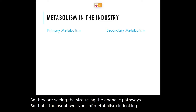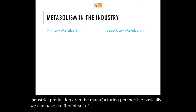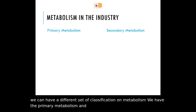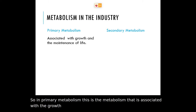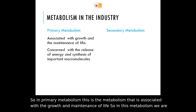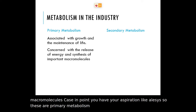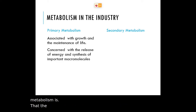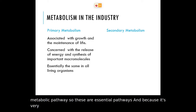Looking at it from an industrial production or manufacturing perspective, we can have a different classification of metabolism: primary metabolism and secondary metabolism. In primary metabolism, this is the metabolism associated with the growth and maintenance of life. We are concerned with the release of energy and the synthesis of important macromolecules — for example, respiration and glycolysis. These are primary metabolism because the cells need them in order to live. One sign that it is primary metabolism is that the cells will die if they don't perform this metabolic pathway — these are essential pathways.